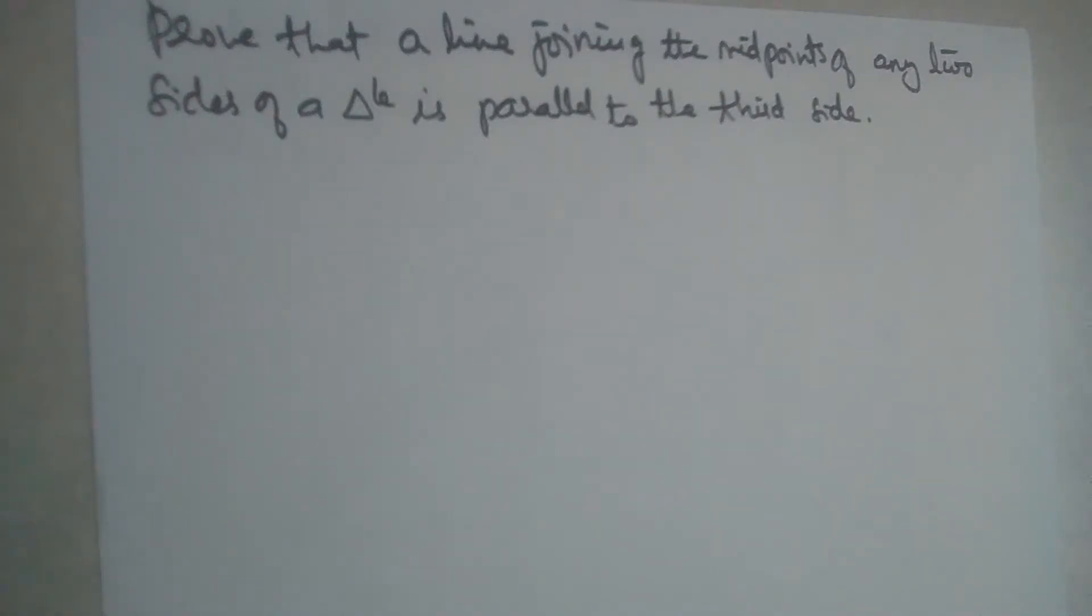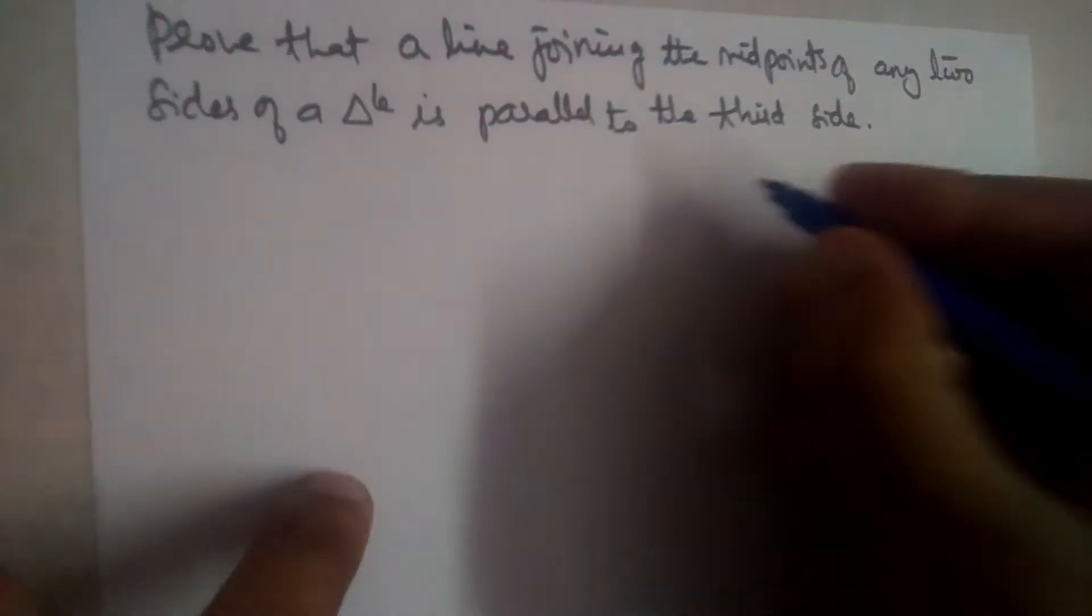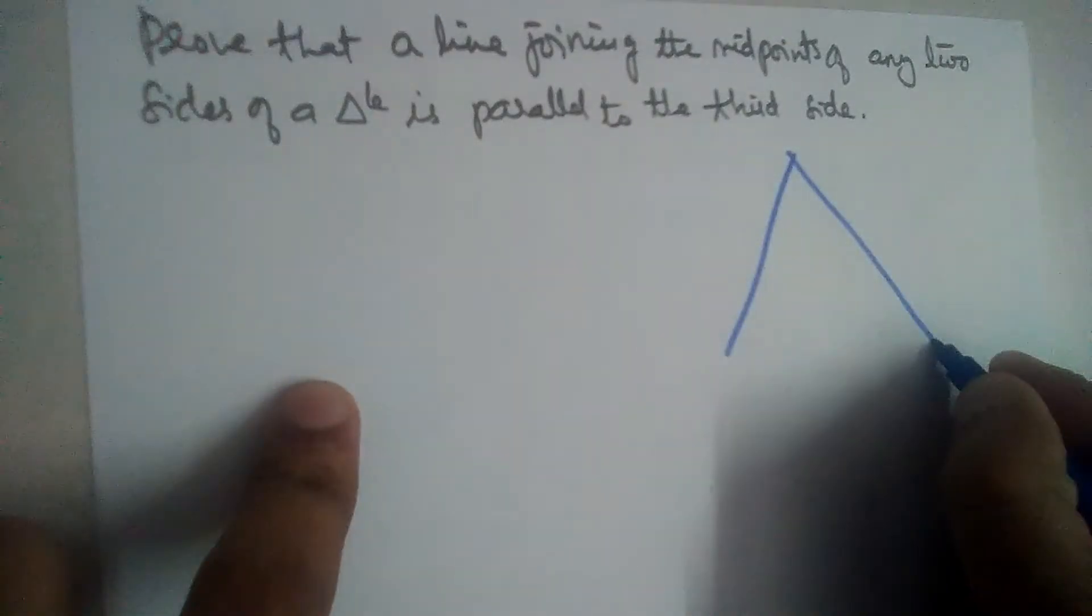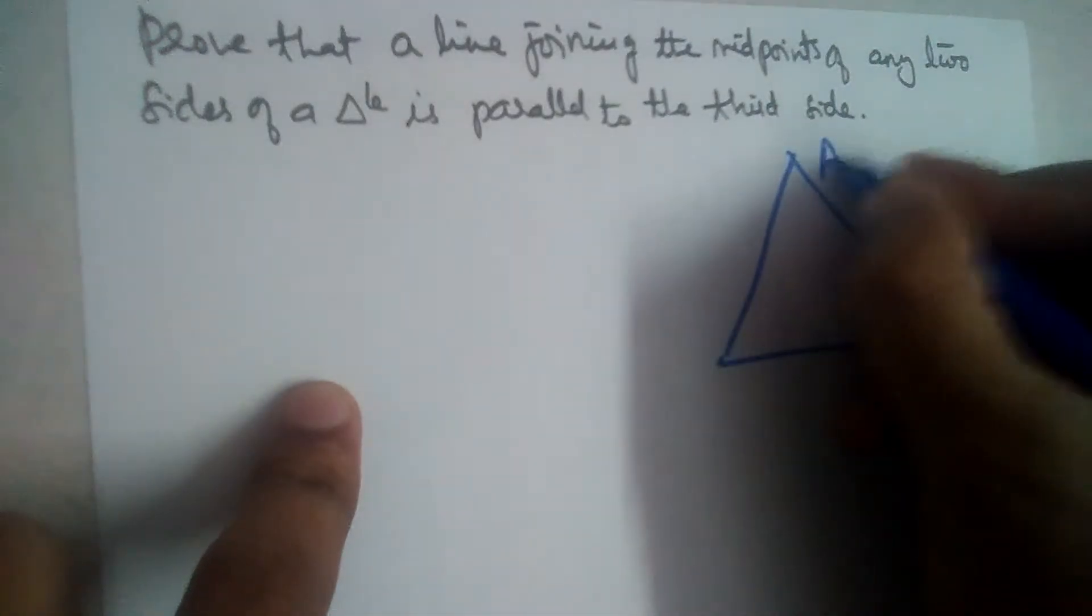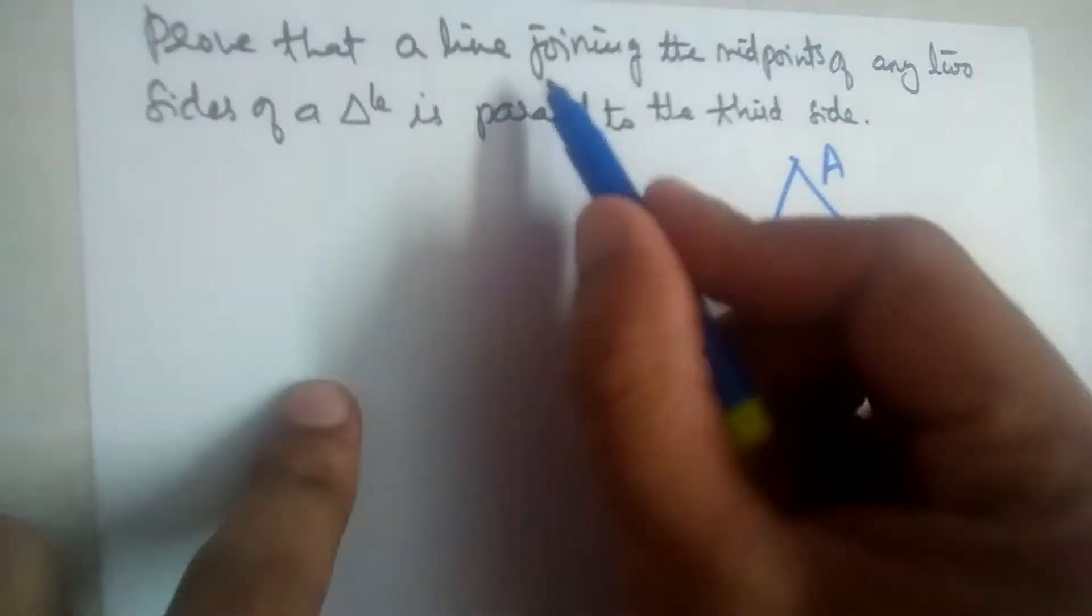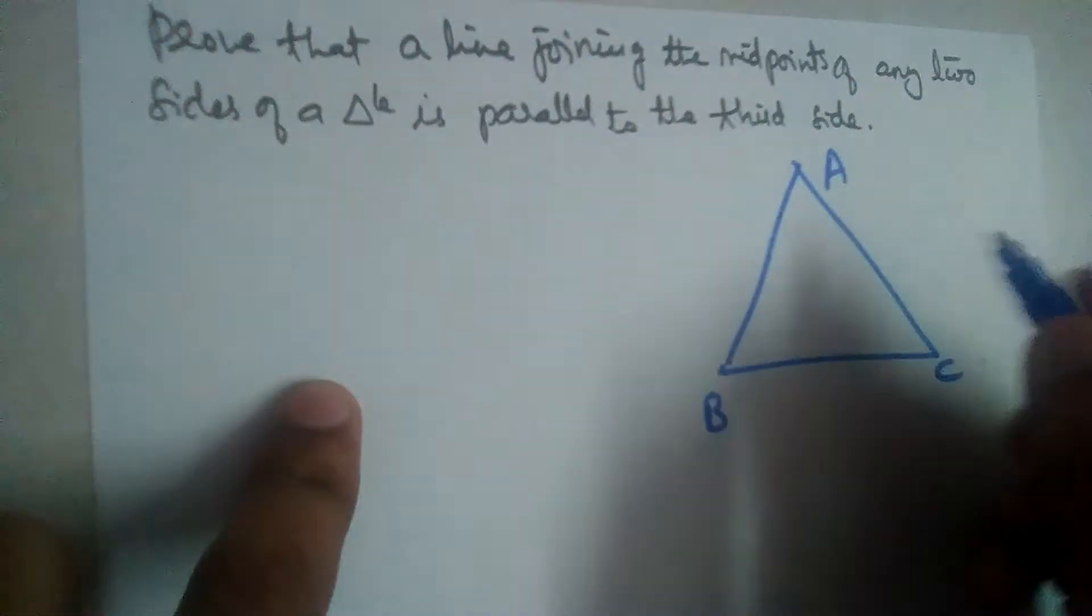Prove that a line joining the midpoints of any two sides of a triangle is parallel to the third side. Okay, so let us draw a triangle. Let us name it ABC.